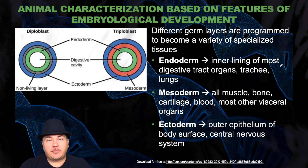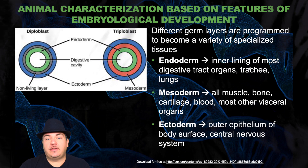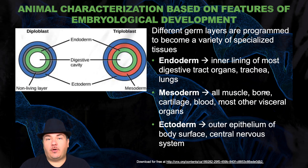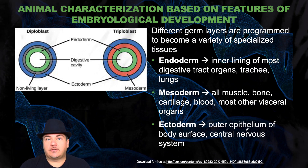These germ layers are programmed to become a variety of specialized tissues. The endoderm becomes the inner lining of most digestive tract organs, trachea, and lungs. The mesoderm becomes all muscles, bone, cartilage, blood, and most other visceral organs. While the ectoderm becomes the outer epithelium of the body surface and the central nervous system.